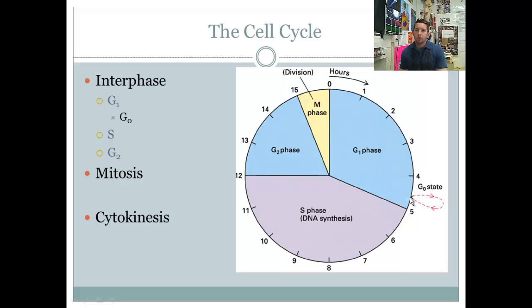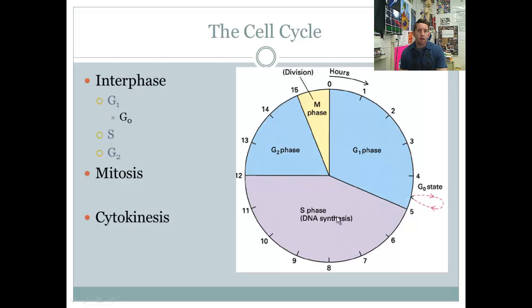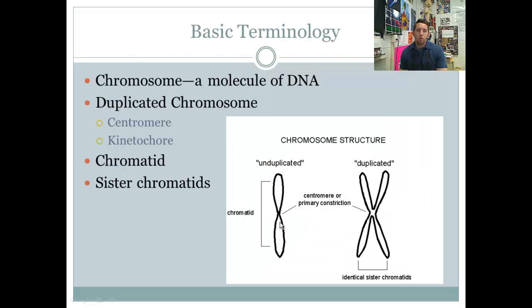Many cells in your body will enter a G0 phase — a holding pattern. Your brain cells, your neurons — you don't want them constantly dividing. There's a limited amount of space in your cranial cavity. If some event occurs where you need more cells, a chemical signal will kick them from G0 into G1 and this process will occur. Without a signal, they'll just maintain that holding pattern. The S phase is when DNA is synthesized — when you go from unduplicated to duplicated chromosomes.